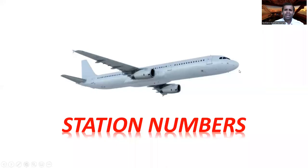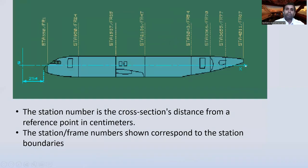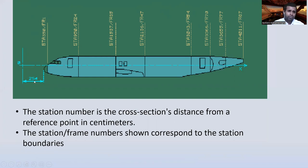The station number is the cross-section distance from a reference point in centimeters. These are the station numbers — station 350, station 950, and so on. These correspond to frames: frame 1, frame 24, frame 35, frame 47, frame 54, frame 70, frame 77, frame 67.